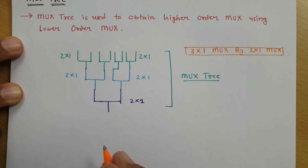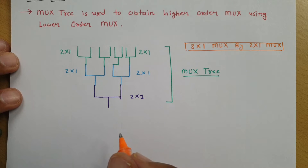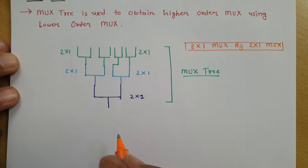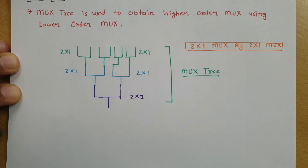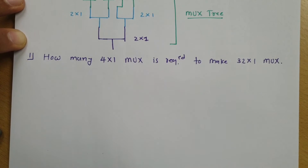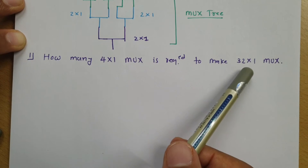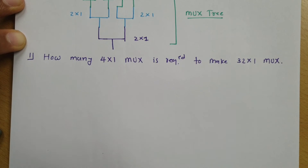Now let me explain how to identify this type of question. In entrance examinations, you will find questions based on how many lower order multiplexers are required to get a higher order multiplexer. Our first question is: how many 4×1 multiplexers are required to get a 32×1 multiplexer?